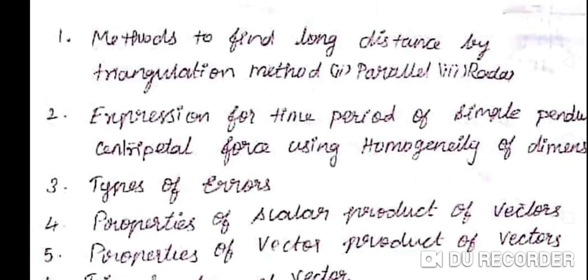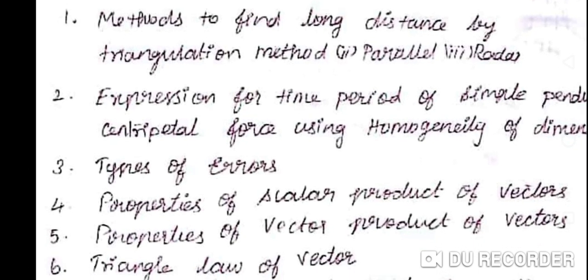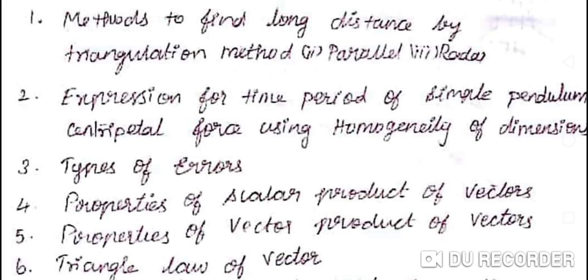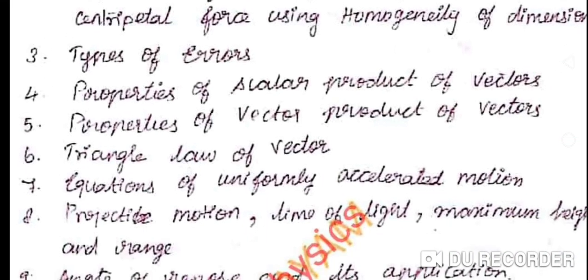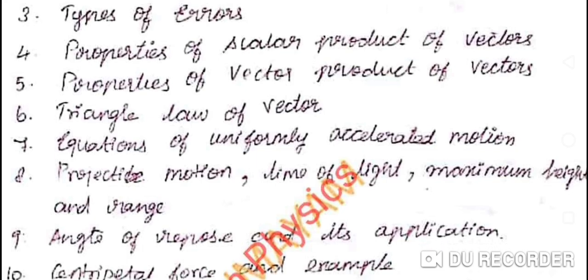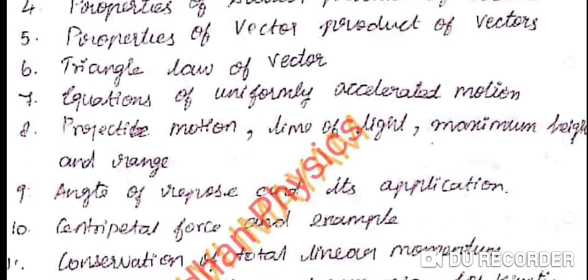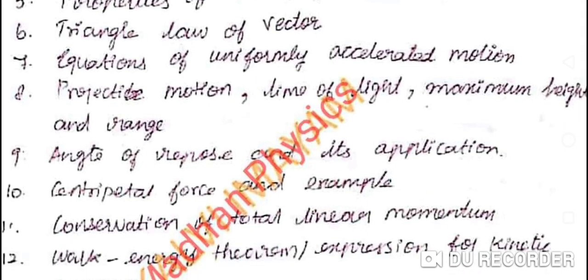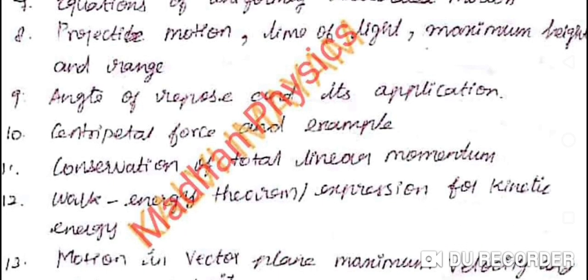In the next section, you will see the triangulation method, parallax, and radar. Also covered: expression for the period of a simple pendulum, centripetal types of errors, properties of scalar product and vectors — that is vector products — triangle law of addition, and the angle of repose.